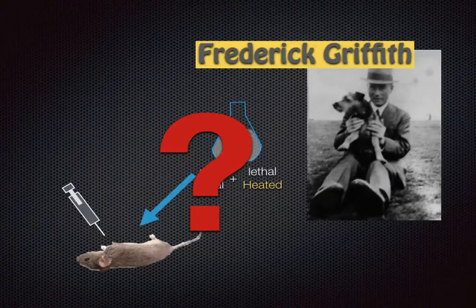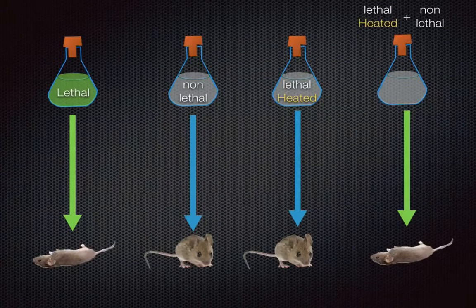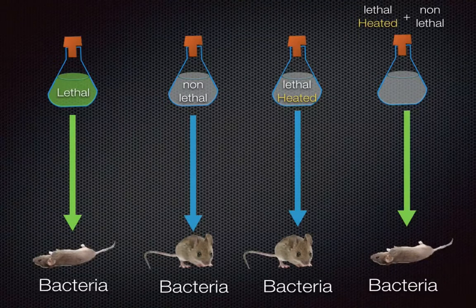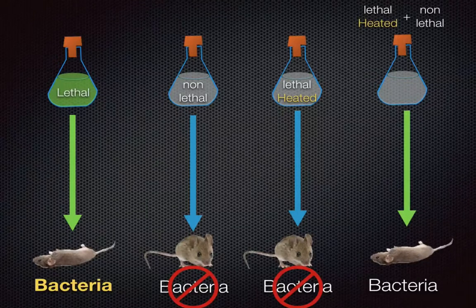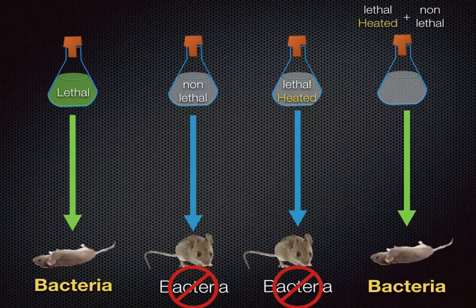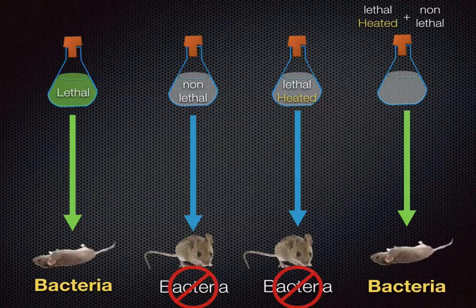This result baffled Frederick Griffith. What killed the mouse? The supposedly lethal bacteria was dead — so how could it cause death? He went back to the mice, extracted the bacteria, and found that lethal bacteria could be extracted from mice injected with the mixture, but not from the other groups. Something was happening where the non-lethal bacteria was being transformed into lethal bacteria. He surmised that the DNA in the dead lethal bacteria was being shared or absorbed by the non-lethal bacteria, causing the death of the mouse.